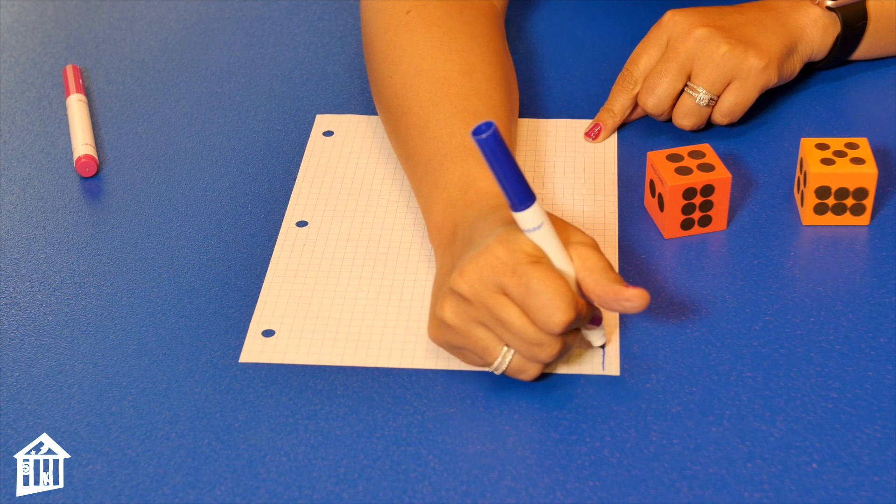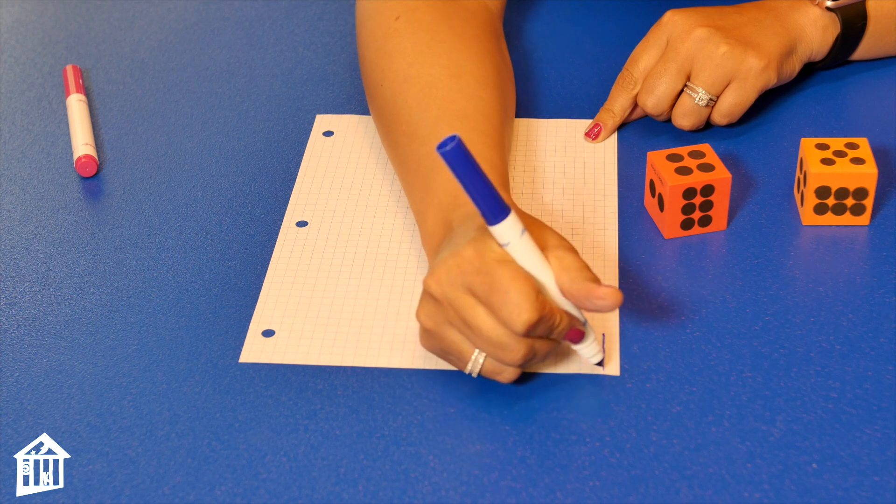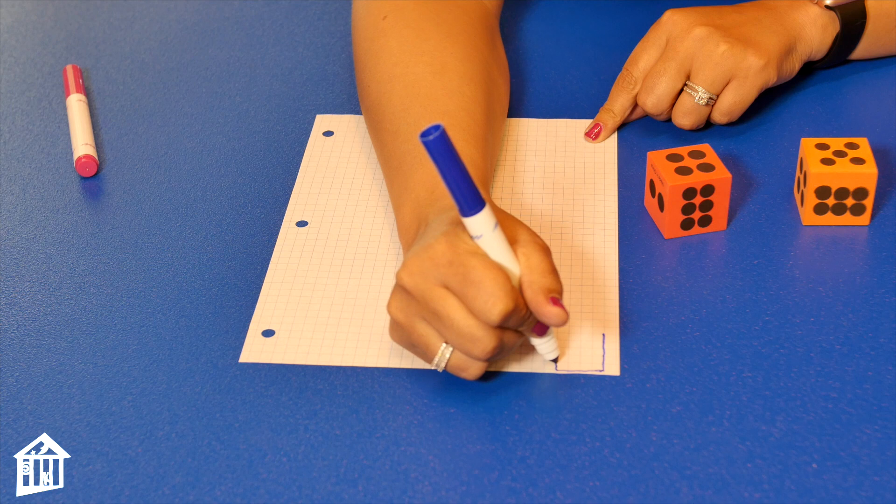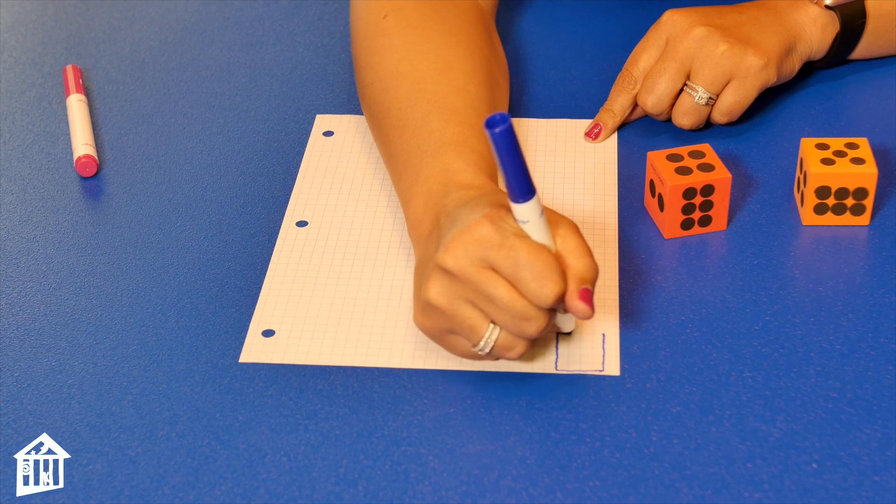One, two, three, four, five groups of one, two, three, four. I'm going to box this in.